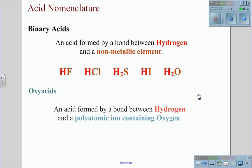This is an acid formed by a bond between hydrogen and a polyatomic ion containing oxygen. Examples of these are HNO3, H2CO3, H2SO4, and H3PO4.